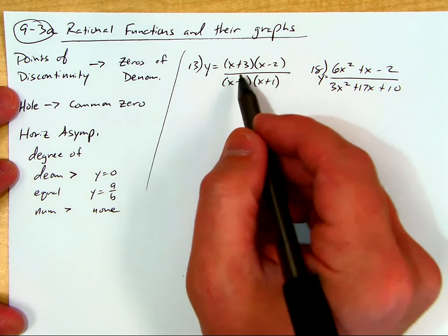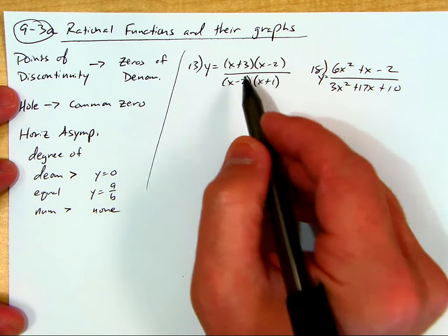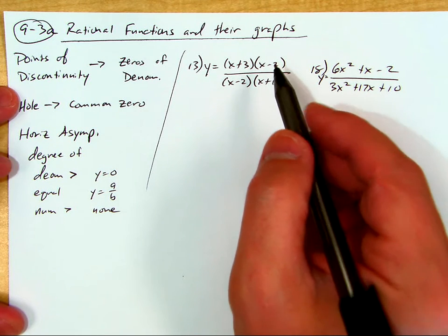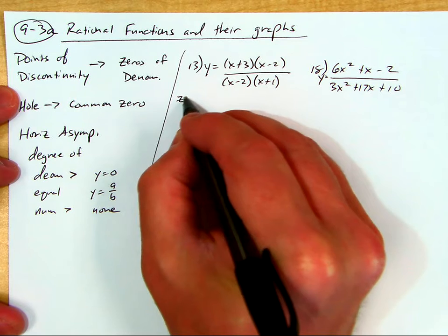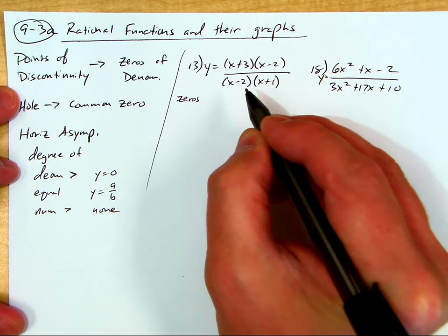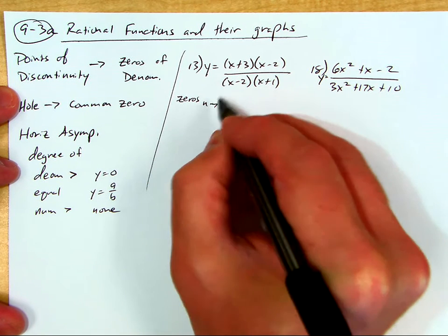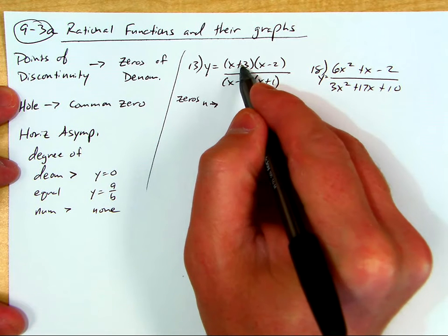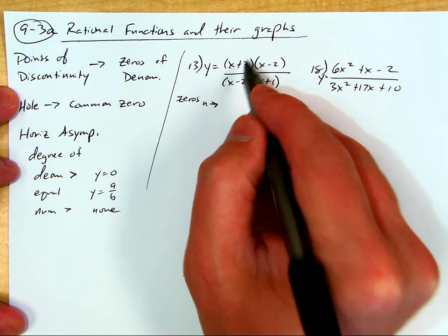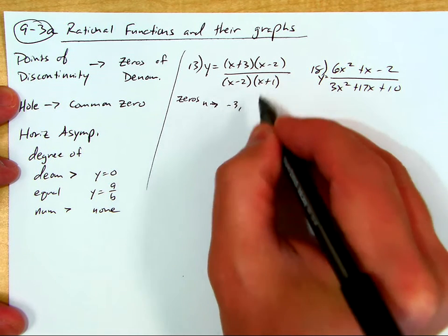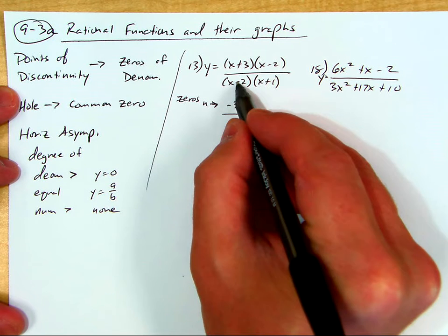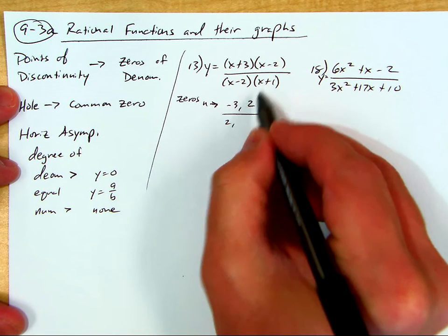So this one right here is number 13. The instructions were to describe the vertical asymptotes and or holes. You've got to find the zeros of both the top and the bottom. So for the numerator, the zeros are at negative 3. This is the zero product property. The zeros are at negative 3 and at positive 2. The denominator, they're at positive 2 and negative 1.